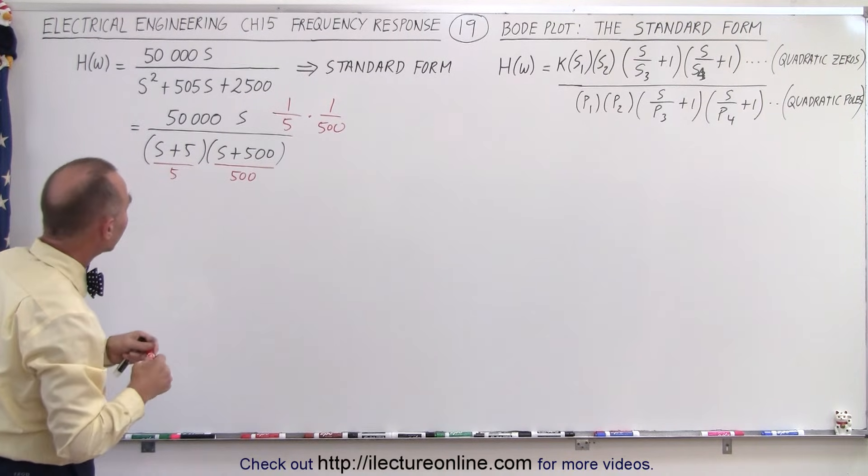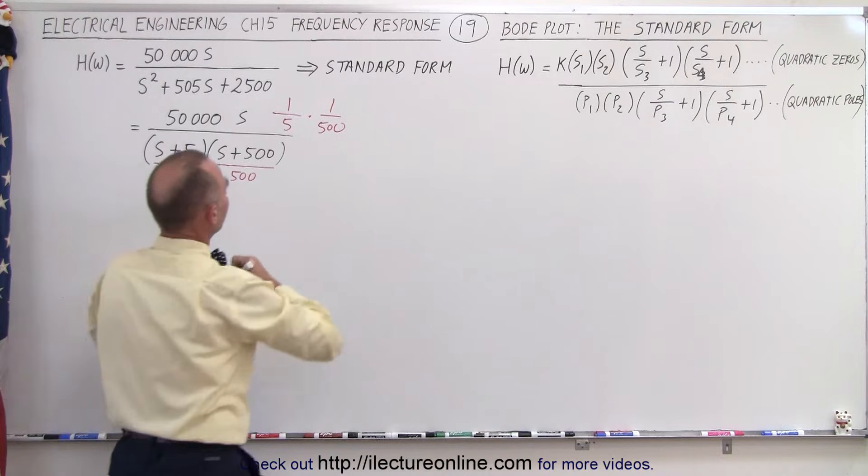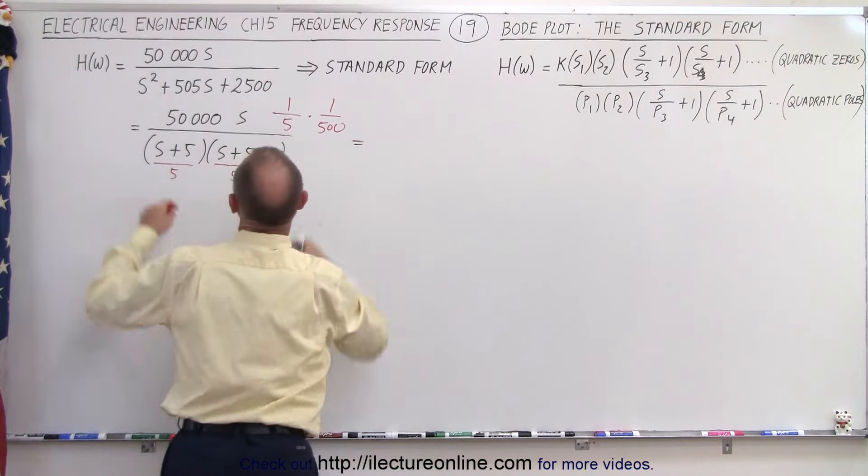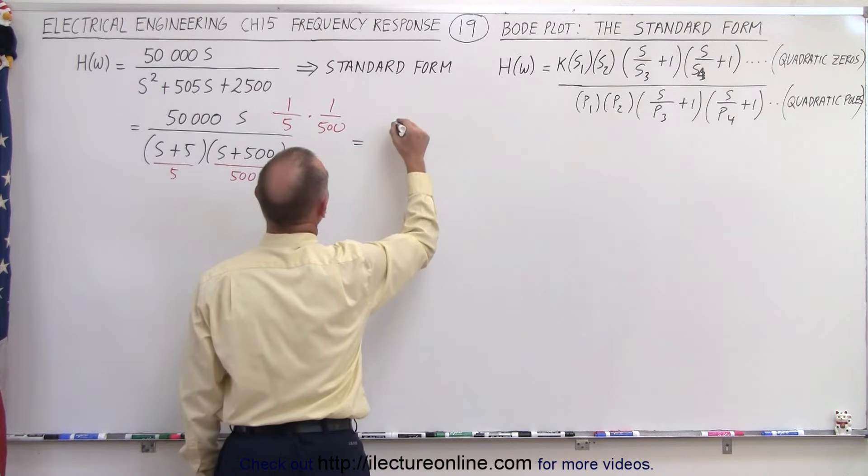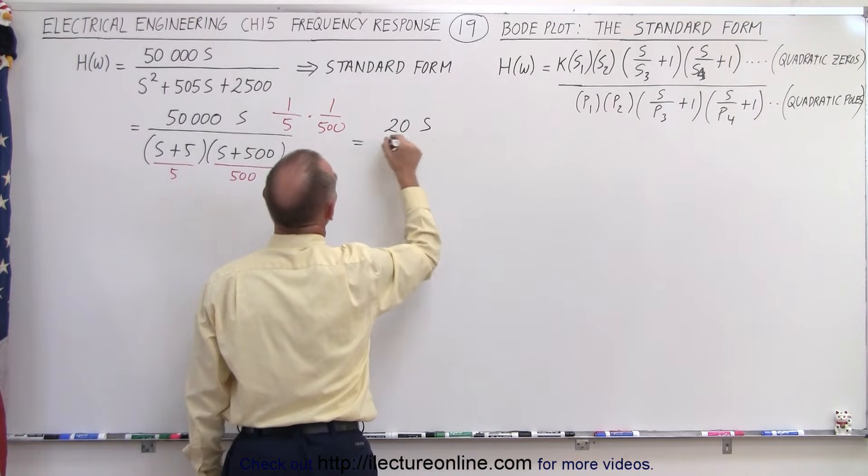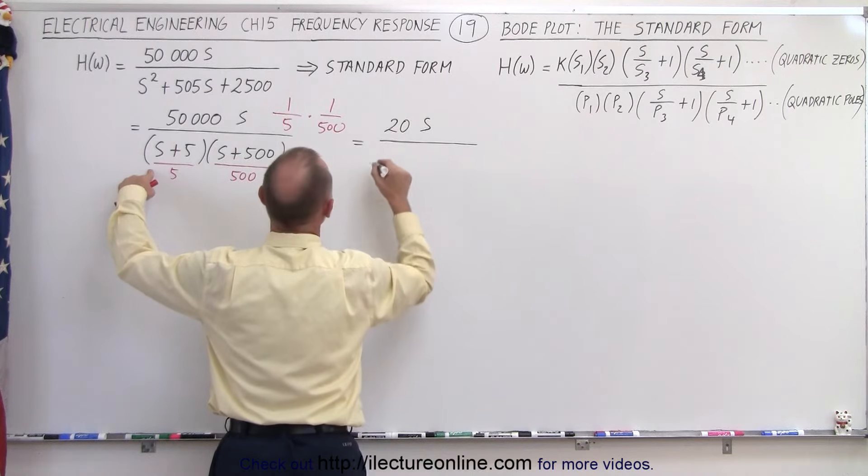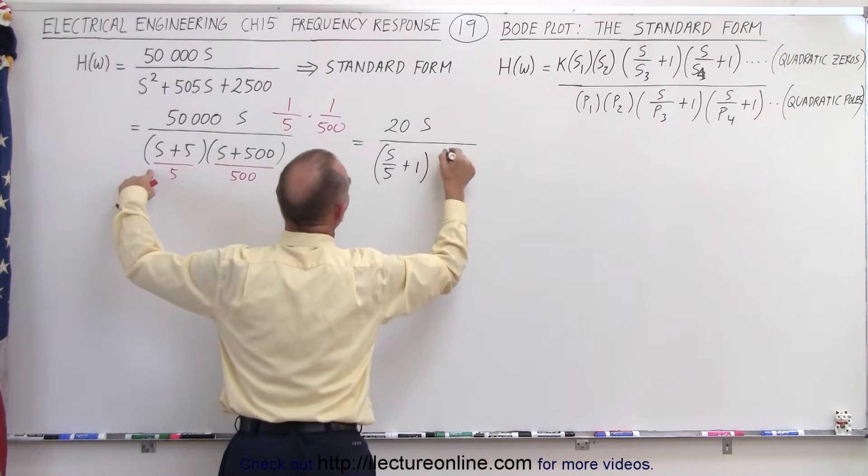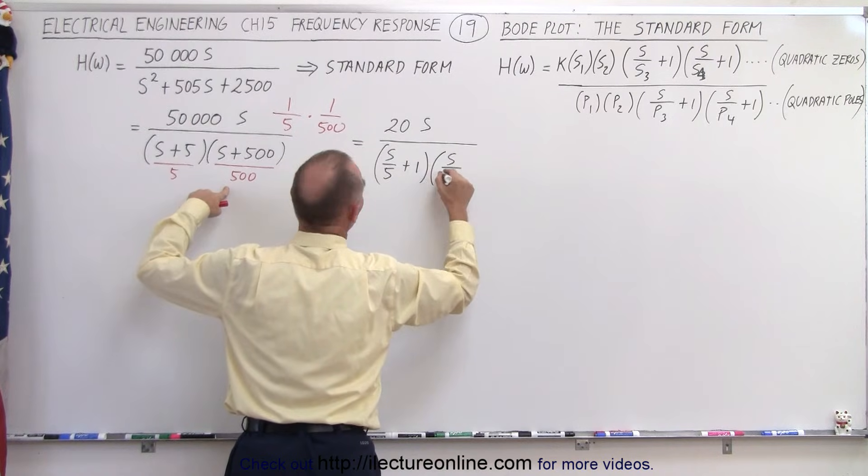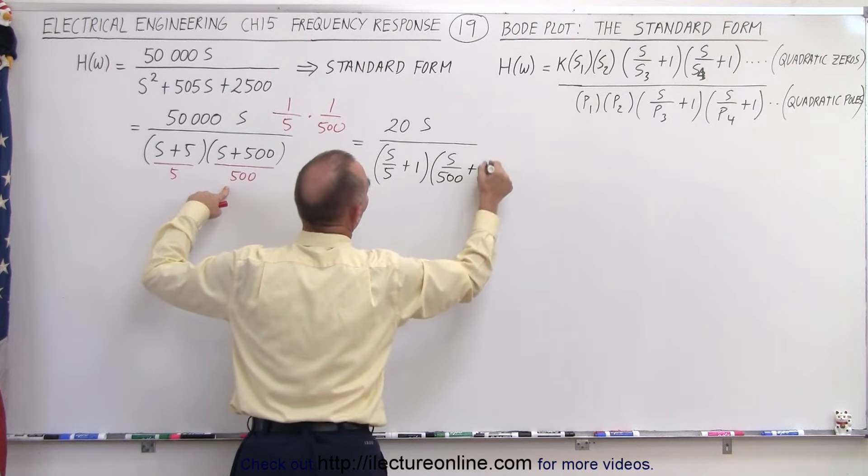What does that look like now? So this is equal to, that's 1 over 2,500 goes into 50,000, looks like 20 times. So in the numerator we get 20s divided by, in the denominator we'll get s over 5 plus 1 multiplied times s over 500 plus 1.